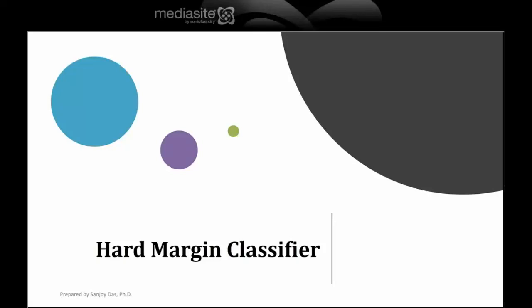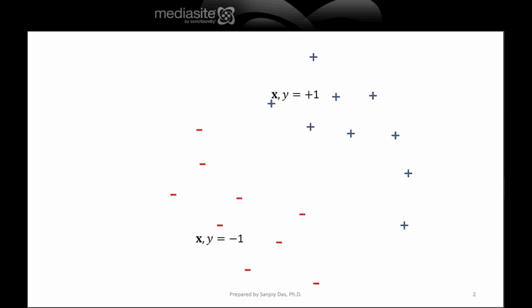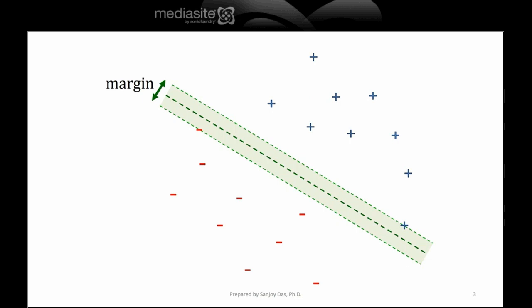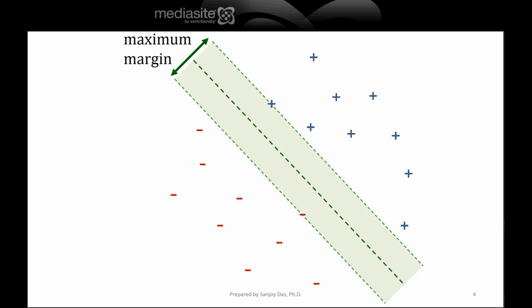We look at the hard margin classifier — that's the basic support vector machine. We have points in n-dimensional space, x's, and they also have labels. On one side the labels are plus 1, which is y, and on the other side y equals negative 1. Our goal is to define a classifier, which is a hyperplane. The hyperplane will have its margin, shown in green. The shaded green region is the forbidden region — data points should lie outside it. They shouldn't be arbitrarily close to the hyperplane, which is the line in the middle. This is the maximum margin.